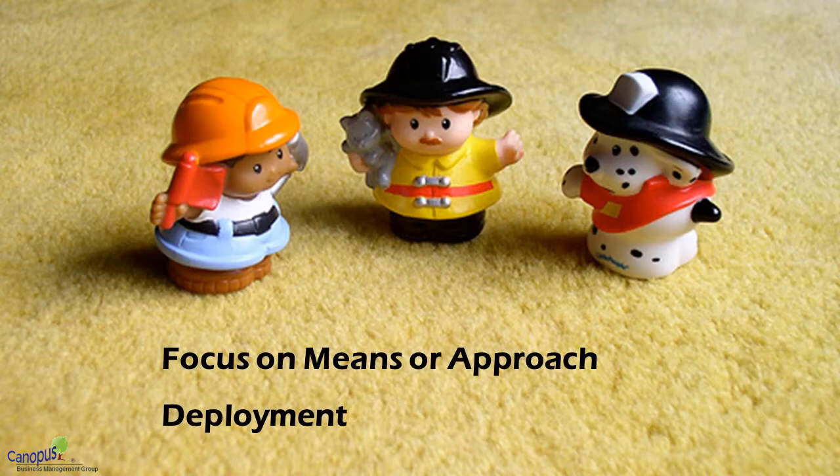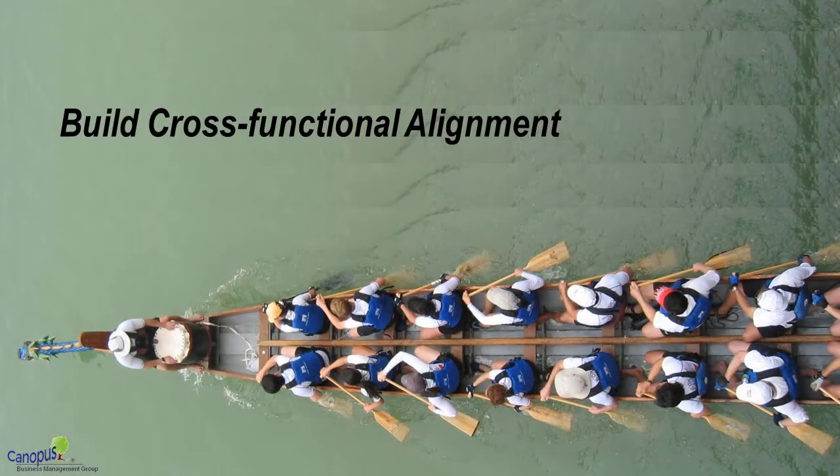If I were to sum up the two key aspects of Hoshin Kanri: first, it talks about focusing on the approach — the means of how you will achieve and how you will act. The second important aspect is cross-functional alignment. Lack of cross-functional alignment in large, mid-sized, or even small organizations with a handful of employees is in fact the biggest issue when it comes to achieving a particular goal. Hoshin Kanri has methods and techniques to achieve that.